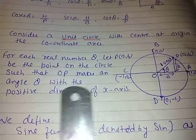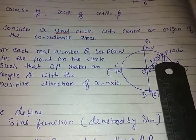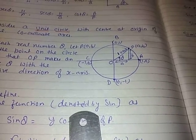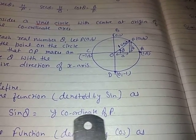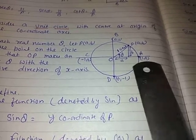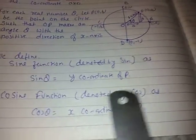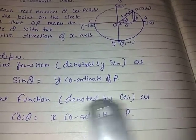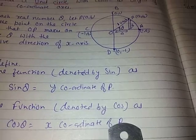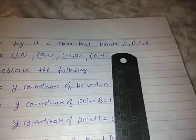We now define the sine function: sin θ equals the y-coordinate of P, and the cosine function: cos θ equals the x-coordinate of P. In the figure, it is clear that the points A, B, C, D are (1,0), (0,1), (−1,0), and (0,−1) respectively.